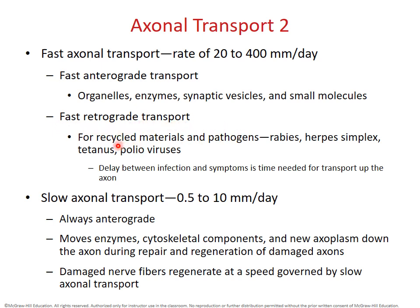Fast retrograde transport is used for recycled materials we want to quickly send back to the cell body, such as neurotransmitter derivatives, so we can remanufacture and recycle them and then transport them back to the axon terminal. When we say fast, we mean rates of 20 to 400 millimeters a day — 400 millimeters is about 4 tenths of a meter. For most axons, that means we can transport things to and from the axon terminal in less than a day using fast axonal transport.